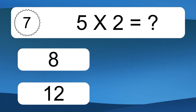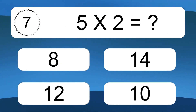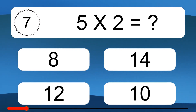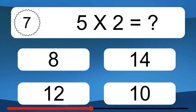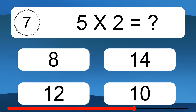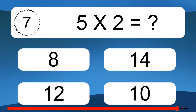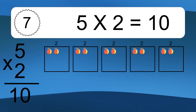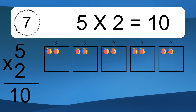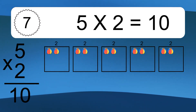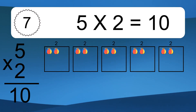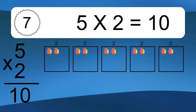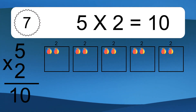5 times 2 equals what? 5 times 2 equals 10. We have 5 boxes, and each box has 2 colorful balls inside. If you count all the balls in all the boxes together, you will have 5 times 2 balls. This equals 10 balls.